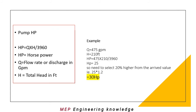Let us see an example: from this video we have 1800 LPM, which converts to approximately 475 GPM. After arriving at the building height, vertical pipeline, fittings, and converting into length, we arrive at 200 feet. Using the formula: HP = 475 × 200 / 3960 = 25 HP. We need to select 20% higher than the arrived value, so 25 × 1.2 = 30 HP. Depending on pump efficiency, we select accordingly.